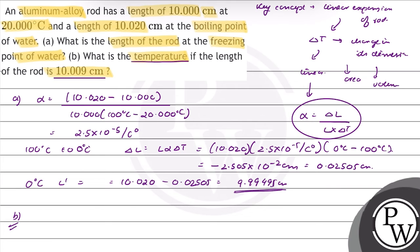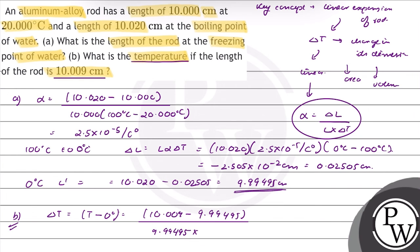For part B, what is the temperature if the length of the rod is 10.009 centimeter? Delta T will be equal to T final minus 0 degree Celsius, which equals (length nu 10.009 minus initial length 9.99495 centimeter) upon (initial length 9.99495 into thermal coefficient 2.5 into 10 raised to power minus 5 per degree Celsius). This will be equal to 56 degree Celsius. So the temperature when the length of the rod is 10.009 centimeter is 56 degrees Celsius.